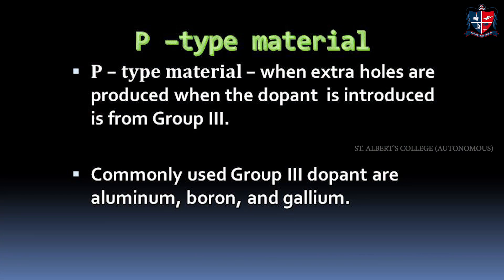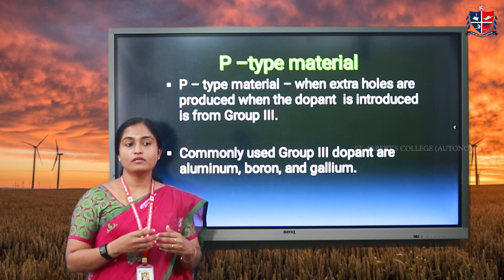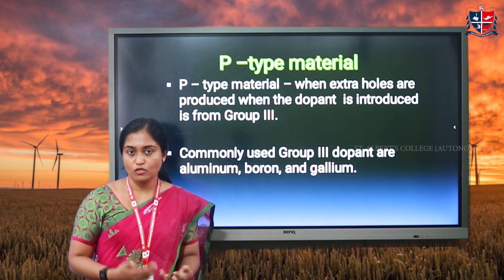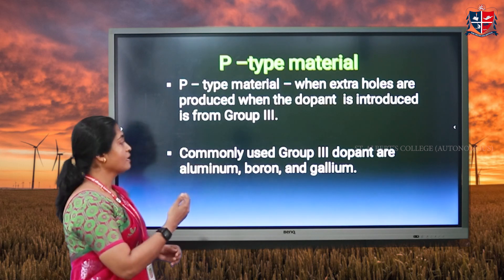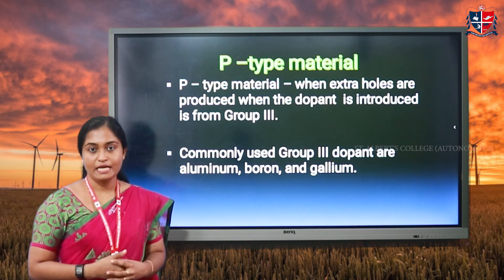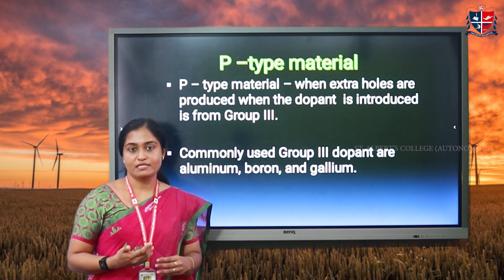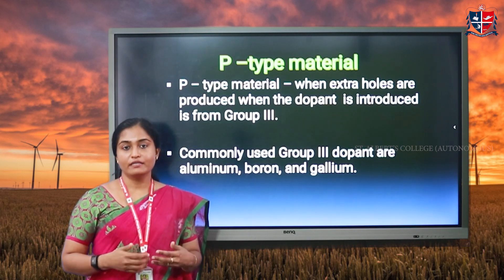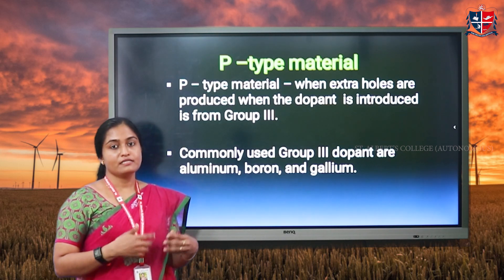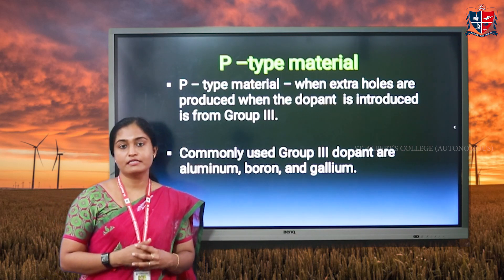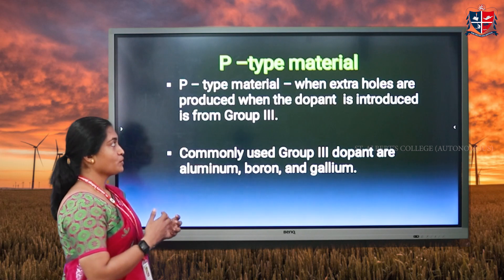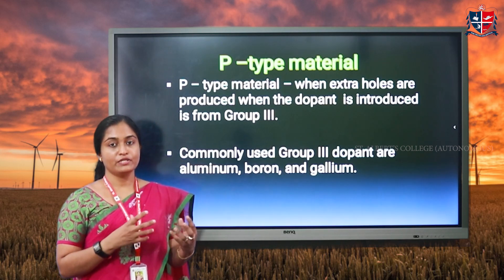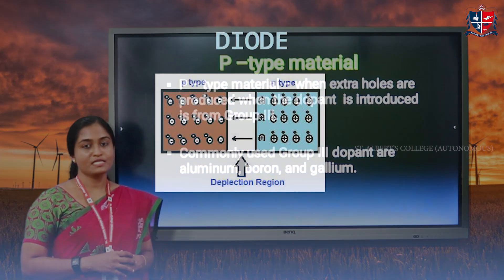For a P-type semiconductor material, we need a trivalent impurity. When we dope the semiconductor material — silicon or germanium — with a trivalent impurity like aluminum, boron, and gallium, there will be an excess of holes. A hole is a vacancy of electrons, termed as a hole. Excess holes will be generated and they are the majority carriers in such a material. We can assign a positive charge to a hole depending on the behavior of the holes, so it is a positive-type semiconductor material.